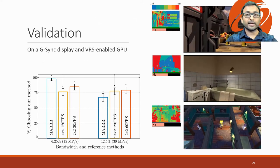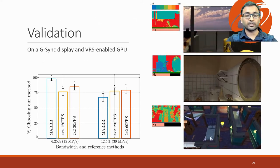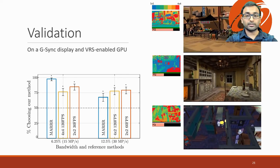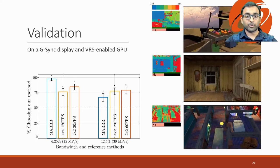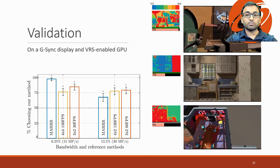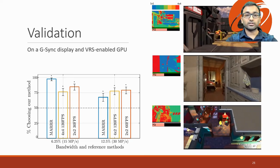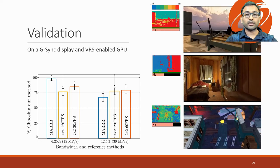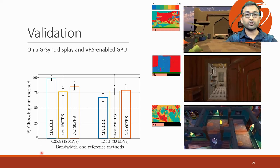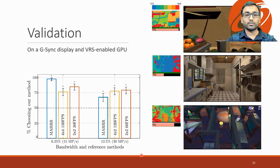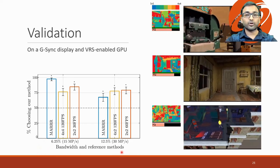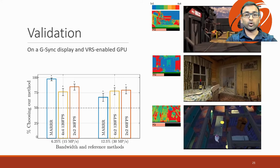We validated our technique in a video game setting on three scenes. The scenes contained a wide variety of motion paths, texture content, and camera controls. We compared ALZAR against the MAR method proposed by Danish and others, as well as fixed refresh rate and resolution rendering. The plot shows the percentage of participants picking ALZAR over other methods. ALZAR consistently performed better than all existing solutions for low bandwidths.